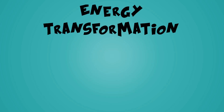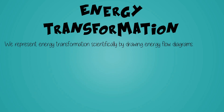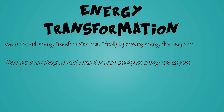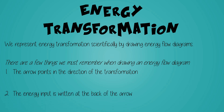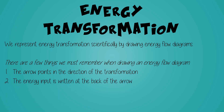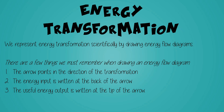Energy transformation is represented by drawing an energy flow diagram, and there are a few key things we must remember when we draw these diagrams. Firstly, the arrow points in the direction of the transformation. Secondly, the energy input is written at the back of the arrow. And finally, the useful energy output is written at the tip of the arrow.